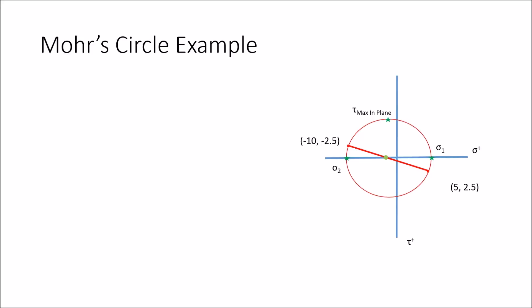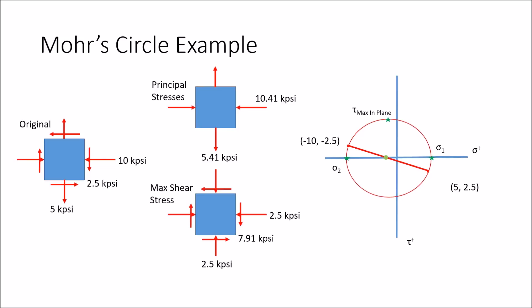Let's bring back the original stress element and look at it. This is what the principal stress element will look like when we rotate it to its particular orientation. Notice the lack of shear stresses. And this is what the max in-plane shear stress looks like, and notice how the x and y stresses are both equal to each other, which makes sense since the max in-plane is the same point for both x and y.